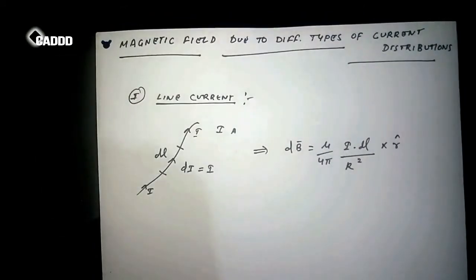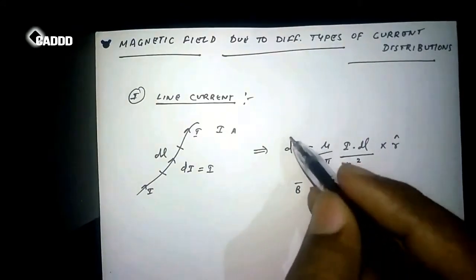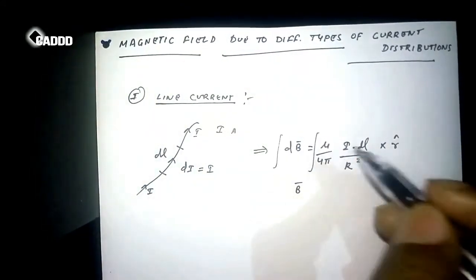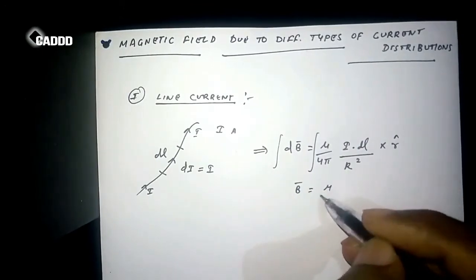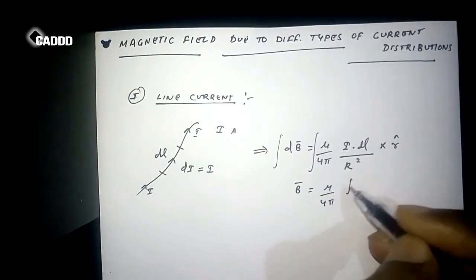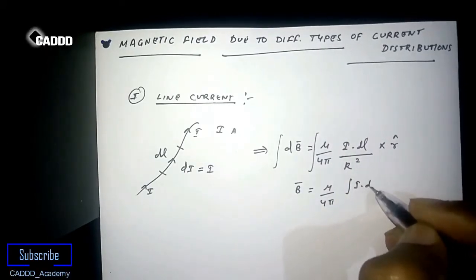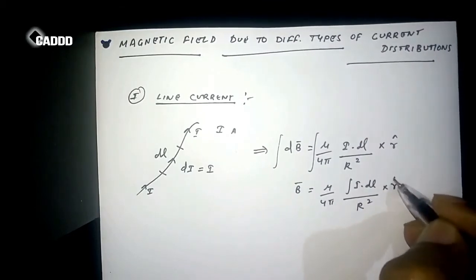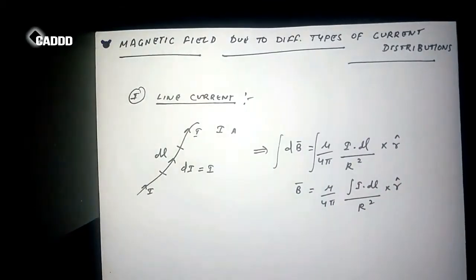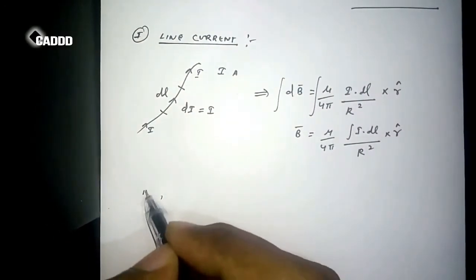So to get the full magnetic field density, we have to integrate both sides. Here we will get magnetic field density B equals mu by 4 pi, and this integration will be with respect to length, which will be I dot dL by r square cross of this direction. So this is simply about Biot-Savart law.